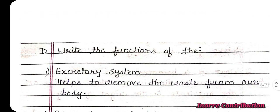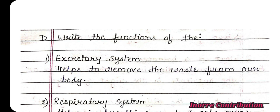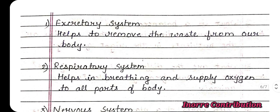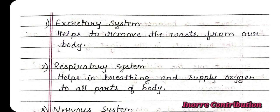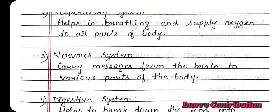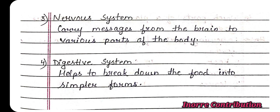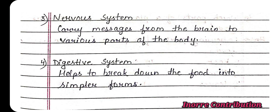Write the functions of the following. First, excretory system: helps to remove the waste from our body. Second, respiratory system: helps in breathing and supplies oxygen to all parts of the body. Third, nervous system: carries messages from the brain to various parts of the body. Fourth, digestive system: helps to break down the food into simpler forms.